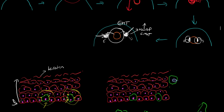The dermoepidermal junction is the boundary between the epidermis and the dermis underneath. At the junction you have these melanocytes — about one melanocyte per every five to ten keratinocytes. They make melanin, and they're quite epithelial in character.